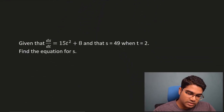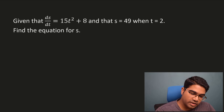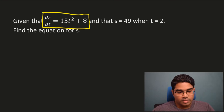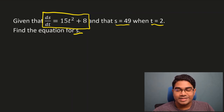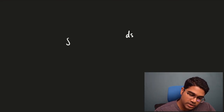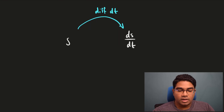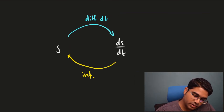Let's try another example with the same concept asked in a different way. Given that ds/dt equals 15t squared plus 8, find the equation of s. They have also given us that when s is 49, t is 2. We are given ds/dt and need to find s. When we start from s and go to ds/dt, we are differentiating with respect to t. So the reverse is simply integration with respect to t. When we want s, all we have to do is integrate ds/dt with respect to t.